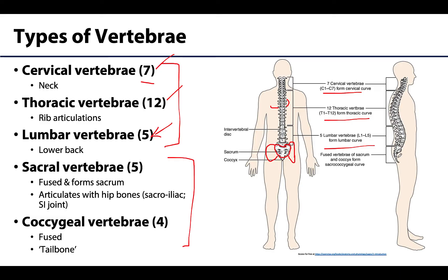Most inferiorly, you have four remnant vertebrae — the fused coccygeal vertebrae. They start larger and get very small by the fourth one. Clinically, we refer to this as the tailbone.